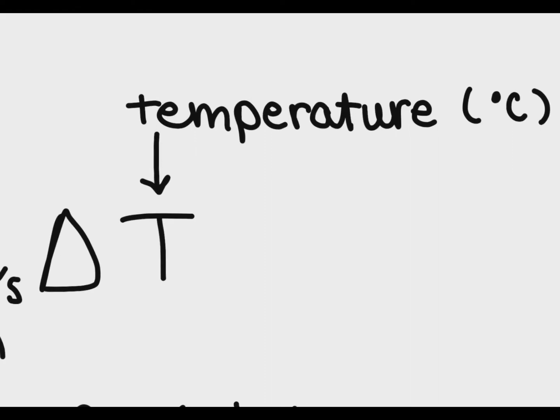Just for clarification, the little triangle or the delta sign in front of the T means a change in temperature and it means final minus initial.